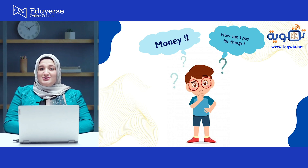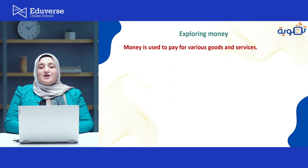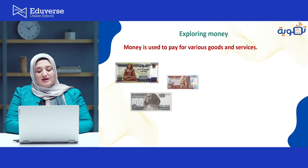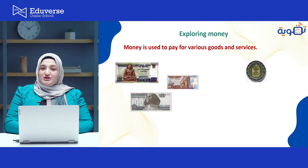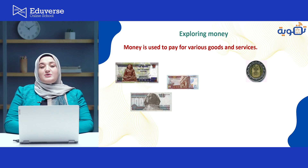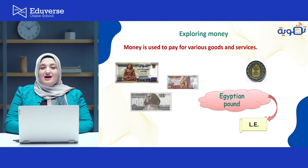Ali, we will tell you what is the meaning of paying and what is the meaning of money. Money is used to pay for various goods and services. Money consists of banknotes and coins. Each country has its own currency. Like in Saudi Arabia they have the riyal, in Kuwait they have the dinar, in the USA they have the dollar. But here in Egypt, we have the Egyptian pound, and we can write it as L.E.